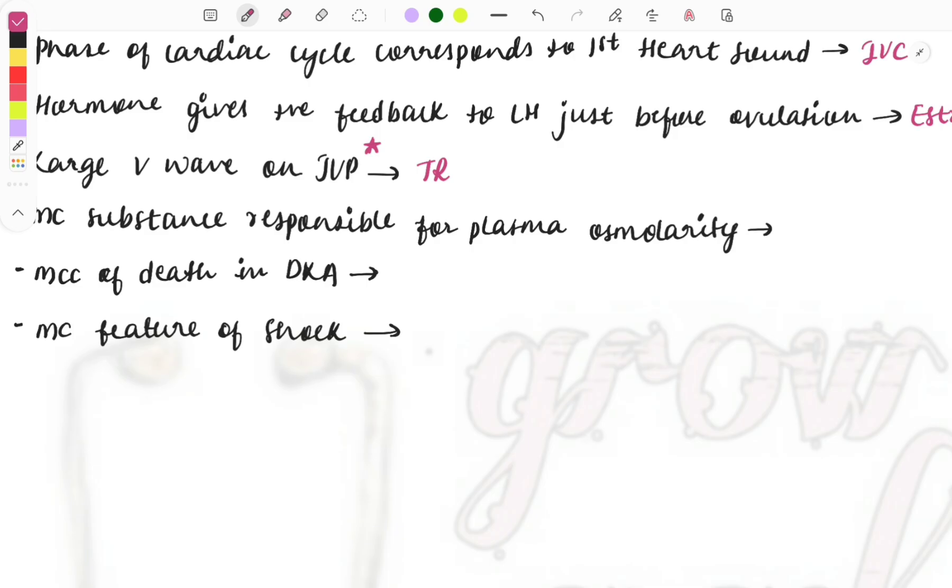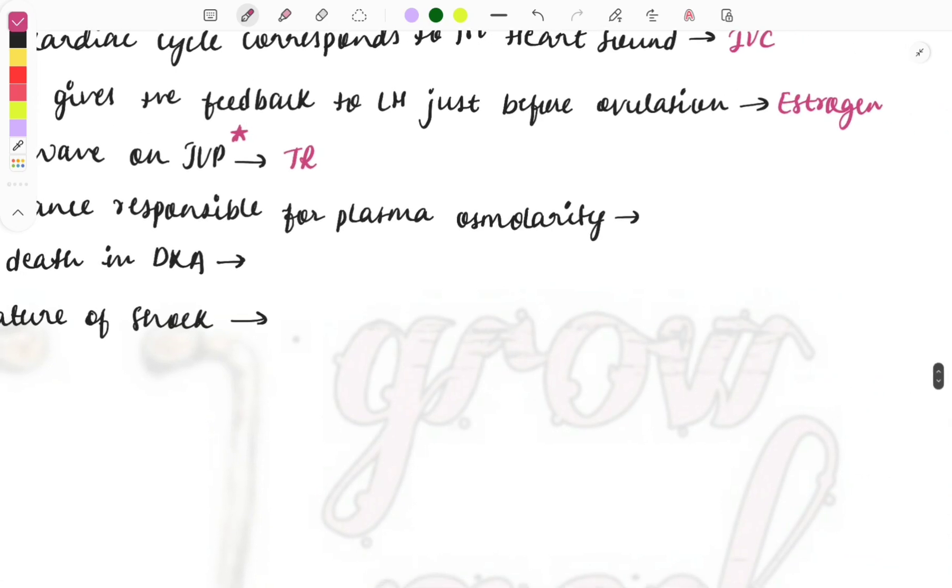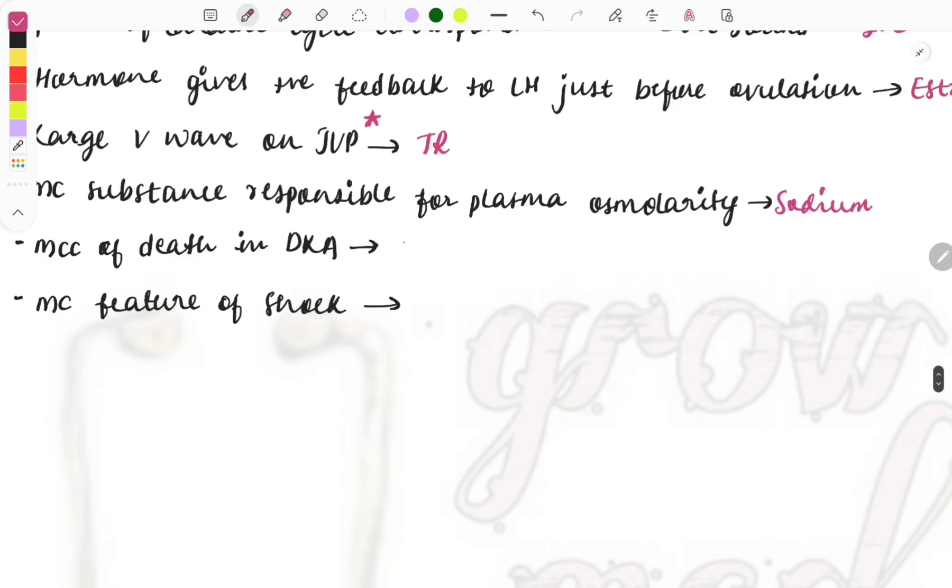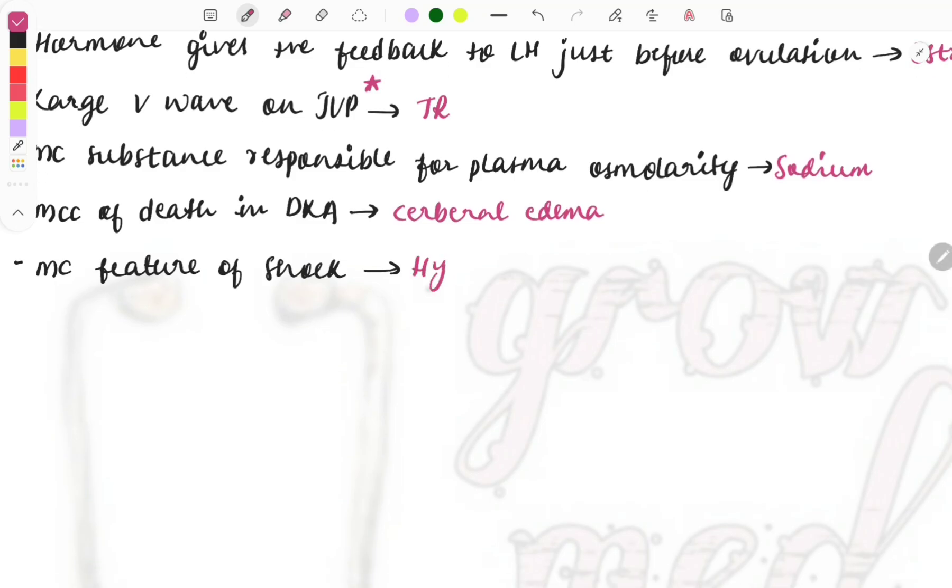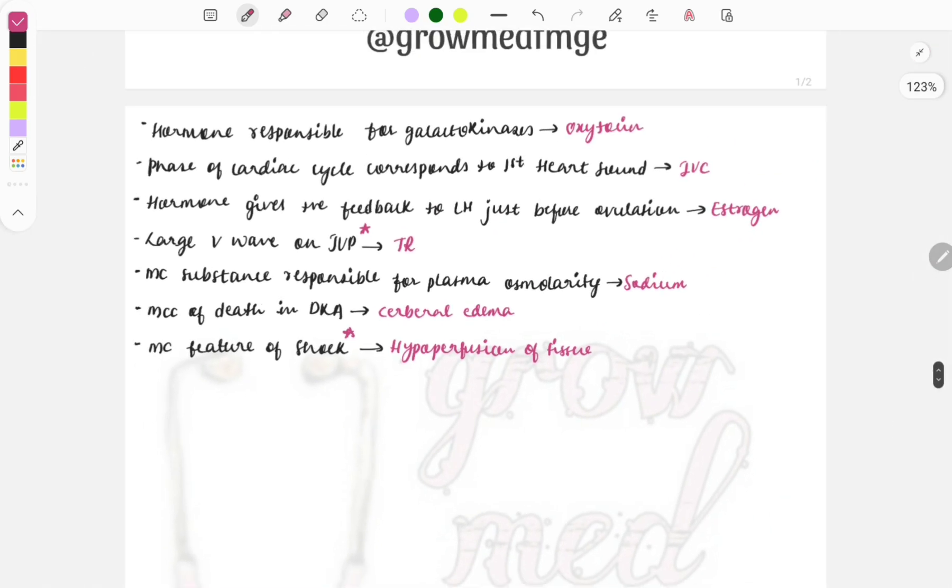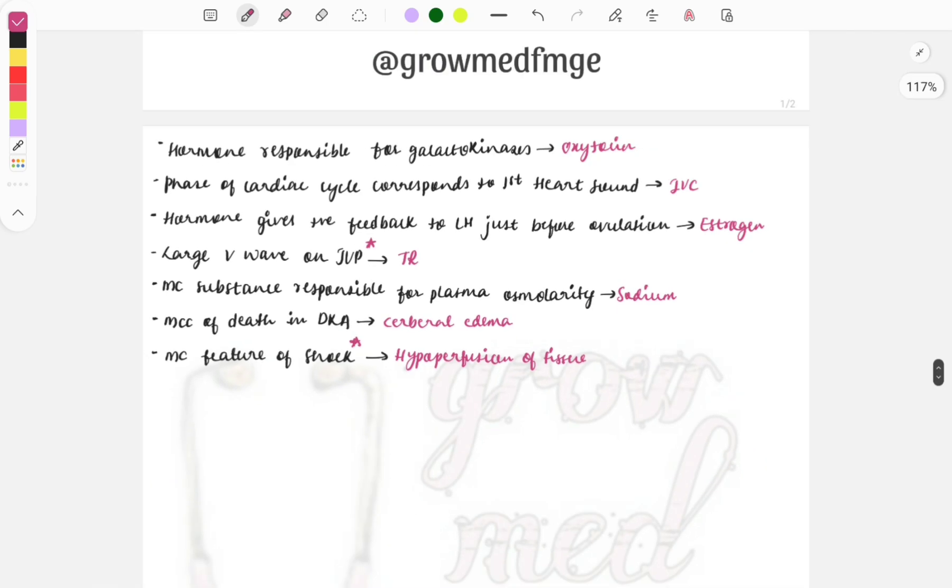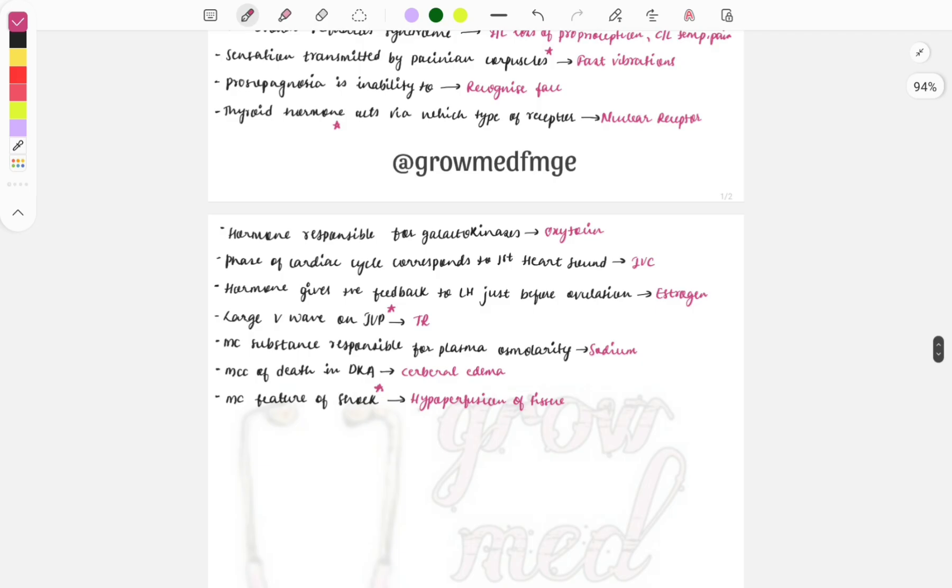Then most common substance responsible for the plasma osmolality, so the substance or the ion that maintains the plasma osmolality is the sodium. Then most common cause of death in the diabetic ketoacidosis is the cerebral edema, asked multiple times and asked in integration with the medicine also. Then most common feature of the shock is the hypoperfusion of the tissue. So this is the common feature seen with all kinds of the shock. And noted down, shock is also again an important topic. So questions are asked on the shock, the types of the shock, the hypovolemic shock, then the distributive shock, then clinical cases are also asked on this. And sometimes the questions are also the management of the shock, like which all fluids you'll be using. So we'll be using mostly the crystalloids, then how will we maintain the blood and blood pressure and all.